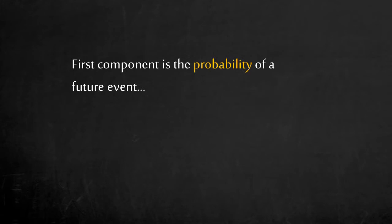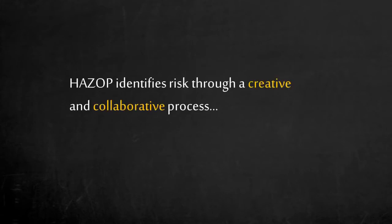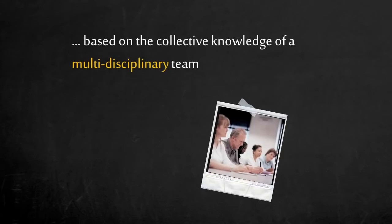The probability of two possible outcomes is 50% before, but 100% after. What changed? The state of knowledge. Probability is the expression of uncertainty. The second component is consequence — this is important because without consequence there is no risk. Consequence is something that matters to you or your company. A HAZOP is a process to identify risk through a creative and collaborative process, done on the collective knowledge of a multidisciplinary team. The two key sets of knowledge are engineering and operations, but they do not always agree.